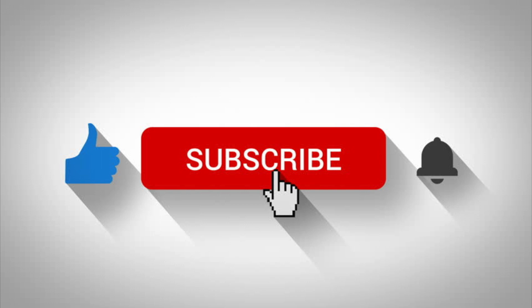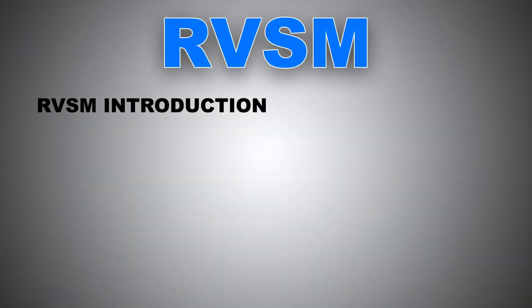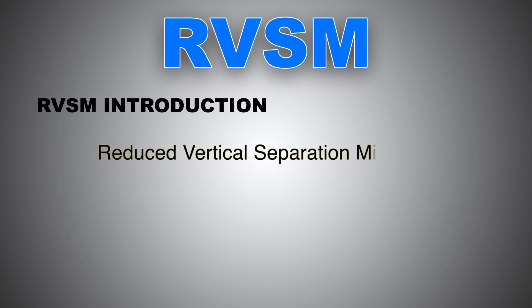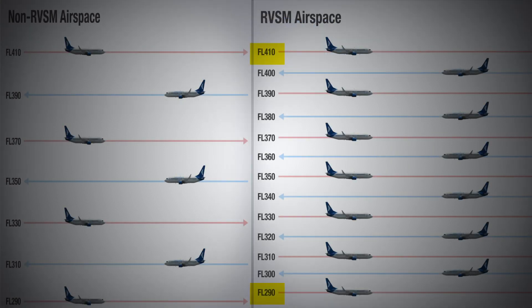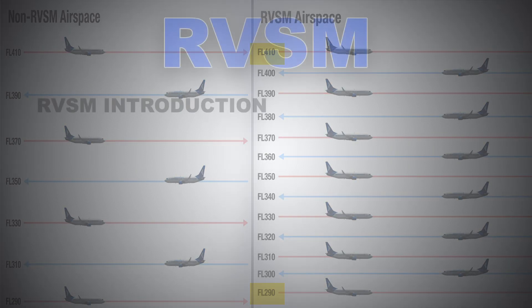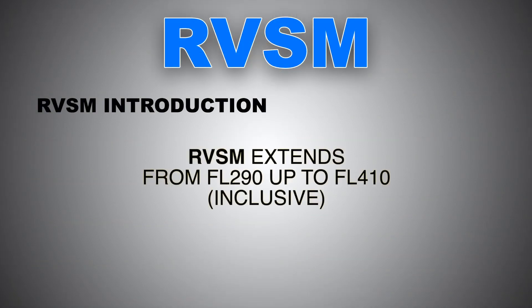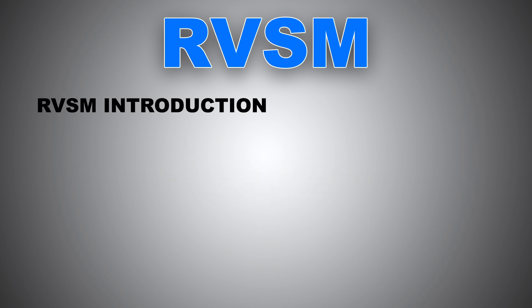RVSM — Reduced Vertical Separation Minima — is defined as the reduction of vertical space between aircraft from 2,000 feet to 1,000 feet at flight levels from FL290 up to FL410 inclusive. RVSM was implemented as a means to increase airspace capacity and provide access to more fuel-efficient flight levels.